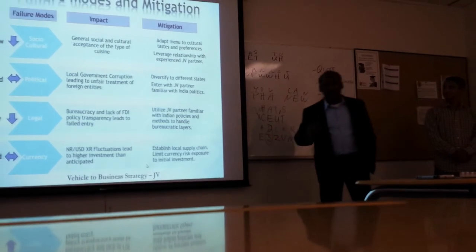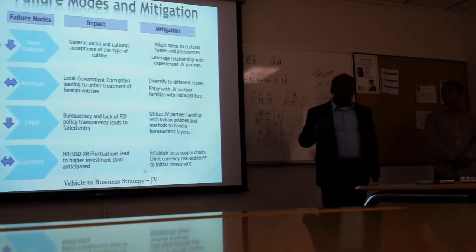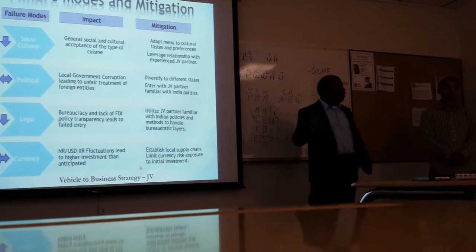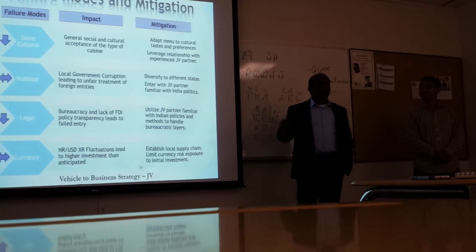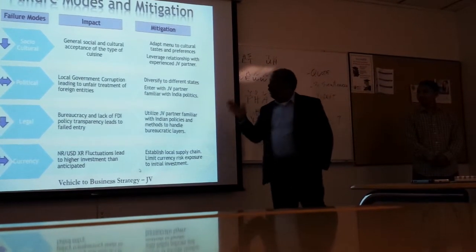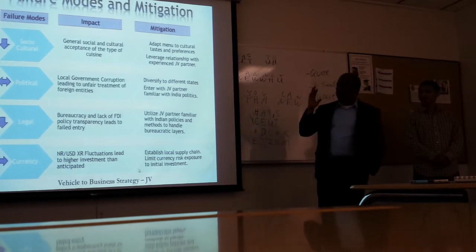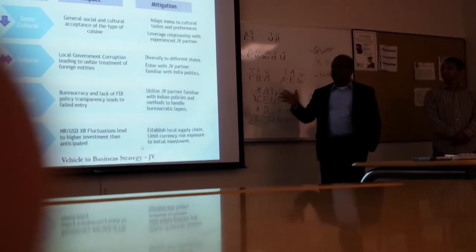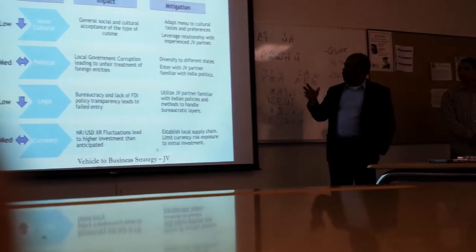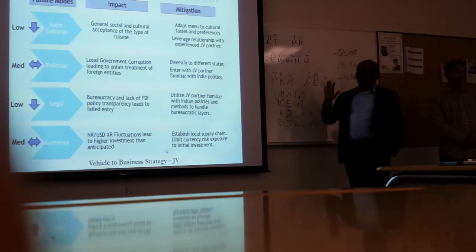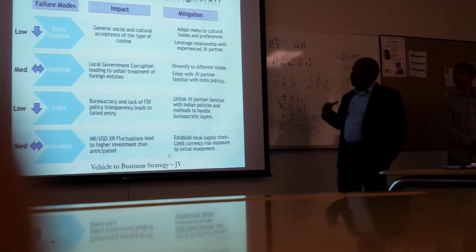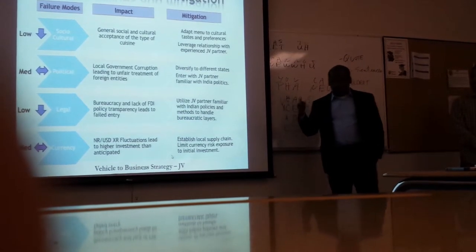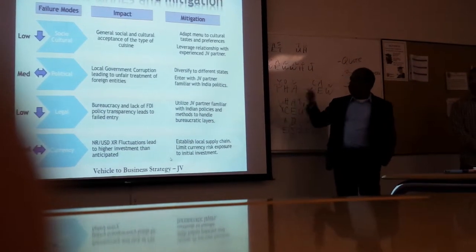This is the failure modes and effects analysis which I've done here to find out which are those failure modes which are critical, low, medium, high, and what would be the impact of that particular failure mode and how do we really mitigate it. If I look at this chart, one of the medium risks is what I found out was the political risk which we have. We put into medium - that would have been higher - the changing political scenarios in India. So how do we really mitigate that? Local governments, the corruption which is already now there, unfair treatment, business ethics problems and all.